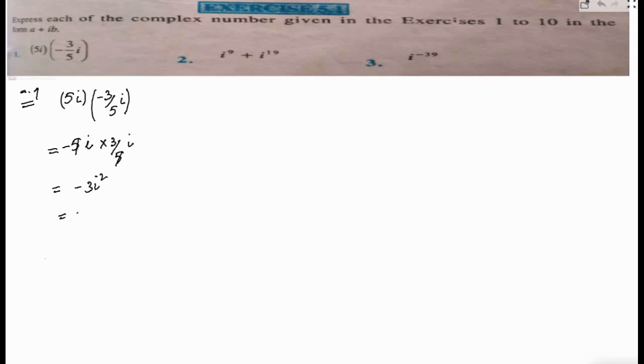That gives us negative 3, which equals 3. But we need to write it in standard form, so the answer is 3 plus 0 iota. That's part number one.